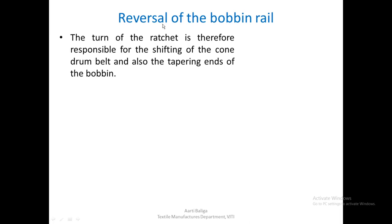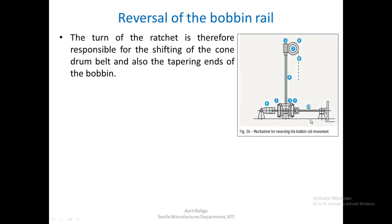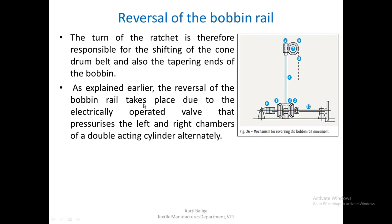The only mechanism that remains to be seen in this slightly modern building mechanism is the reversal of the bobbin rail. Similar to the earlier conventional one, the reversal takes place due to an electrically operated valve that pressurizes the left and right chambers of a double-acting cylinder. This electrically operated valve will pressurize the double-acting cylinder — there is a piston here — first pressurizing the right chamber and then the left chamber.